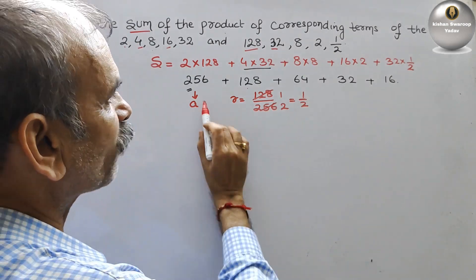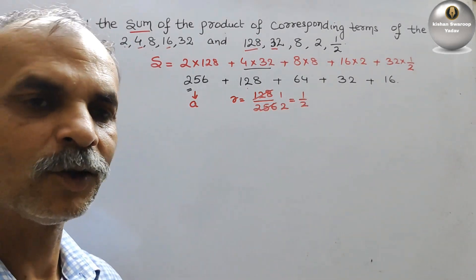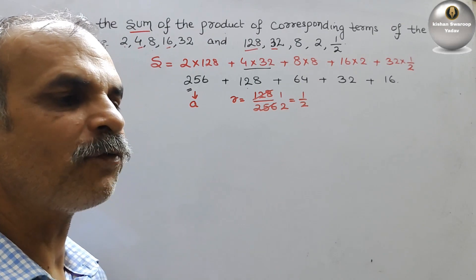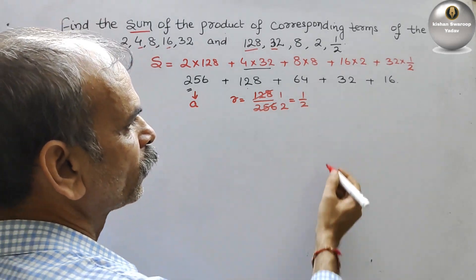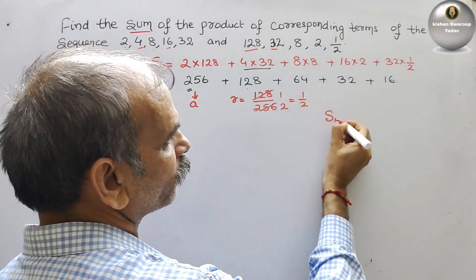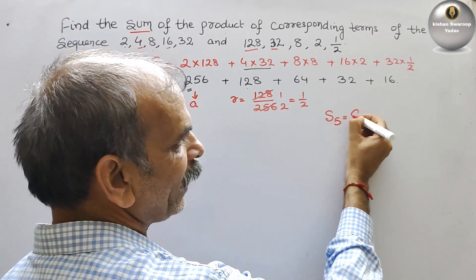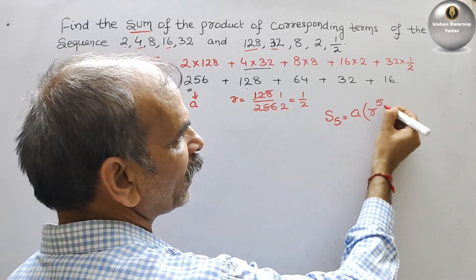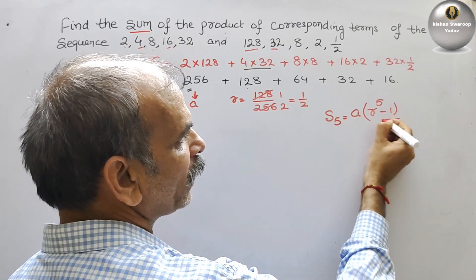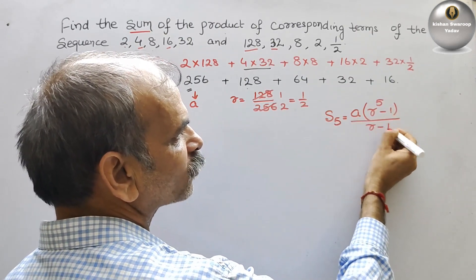Now you can see there are 5 terms. So we have to find the sum of 5 terms, S5. That is equal to A(R^5 - 1)/(R - 1).